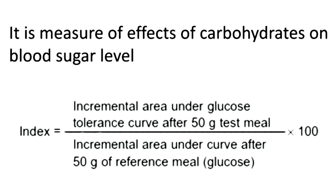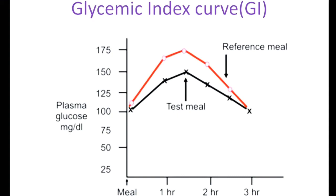In the graph there are two curves — one indicated in black and the other in red. The black curve indicates the test meal: 50 grams of a test meal is given and its effect on blood sugar level is compared with the same amount — 50 grams — of the reference meal, which is glucose. Here you can see the effect of the test meal is less than the effect of the reference meal.